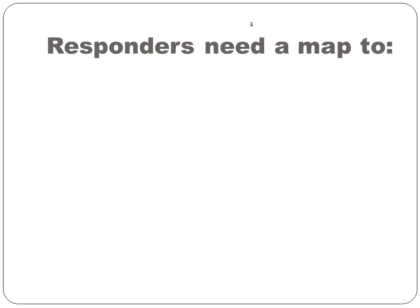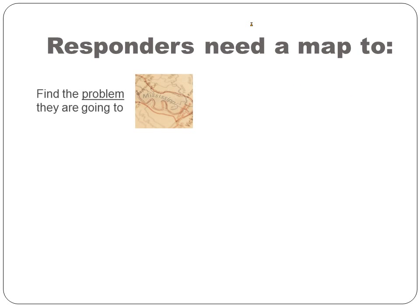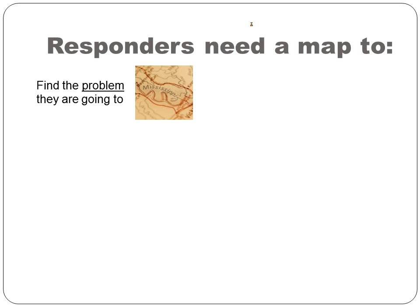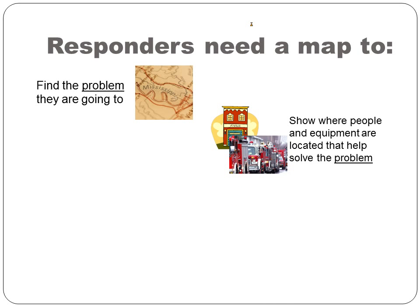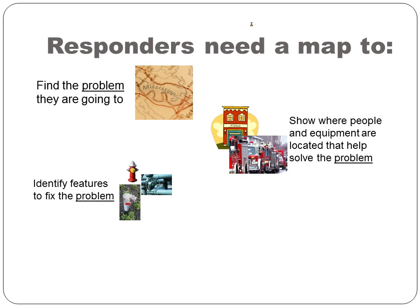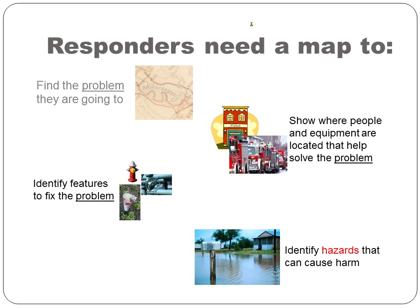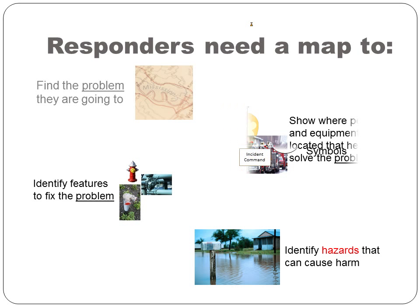Responders need maps for four reasons. They need help to find where to go. They need to know where equipment is located and where people are located. They need help to identify features that help solve the problem they're trying to fix. And they need to know where hazards are located so that they can either avoid the hazard or fix the hazard.